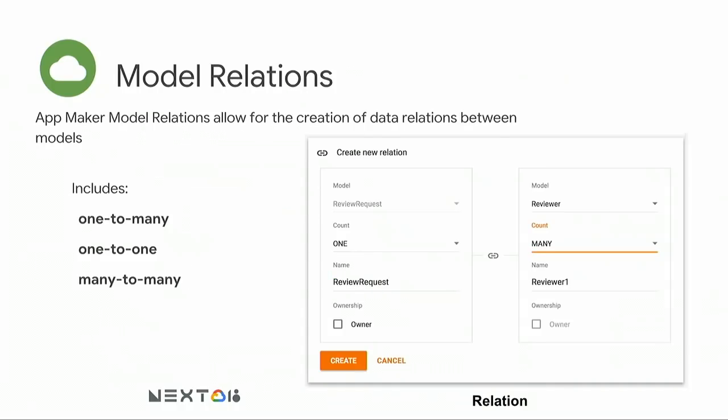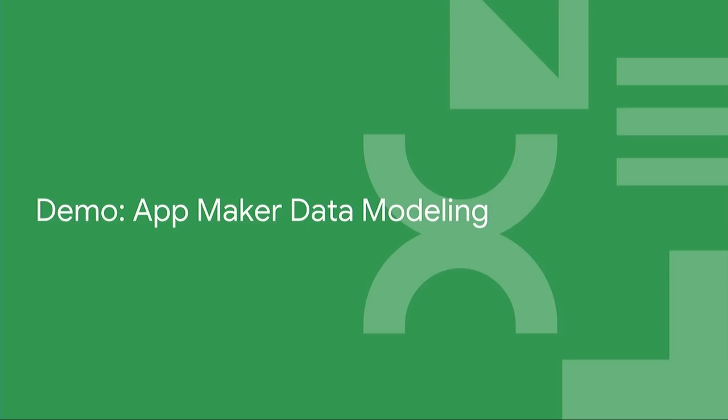Relations are another very powerful feature with App Maker — you don't even need a relational database. As long as you have your models, you can set up relations between them, and they pretty much follow standard relationships: one-to-many, one-to-one, many-to-many. You do it in a visual sense — you just put them side by side and set up the cardinality. For this particular demo I'm not actually using relations, but you can see plenty of other examples of how to use it.